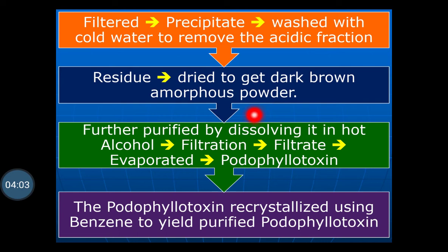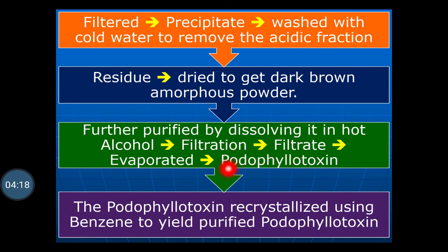For purification, this dark brown amorphous powder is dissolved in hot alcohol and filtered again to remove impurities. The filtrate is evaporated to dryness to obtain podophyllotoxin. Further, this podophyllotoxin is recrystallized using benzene to yield a purified podophyllotoxin.